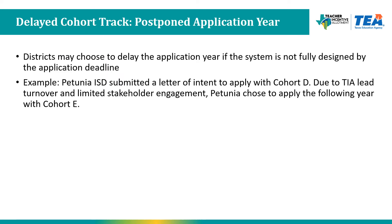A district may not remain on their original or intended cohort track. One example is if a district chooses to postpone the application year — the district may decide to delay their application if the system is not fully designed or ready by the deadline. For example, Petunia ISD submitted a letter of intent to apply with Cohort D, but due to TIA lead turnover and limited stakeholder engagement, they chose not to apply until the following year. Petunia ISD may now identify as a Cohort E district.